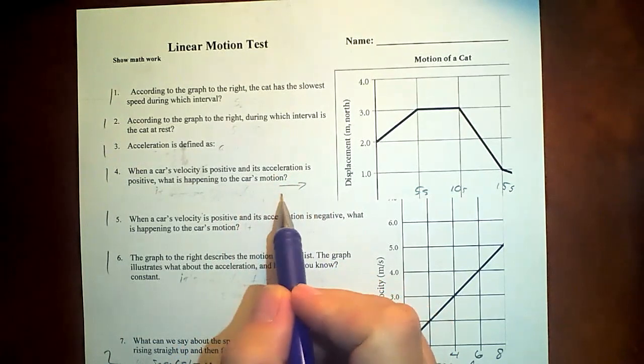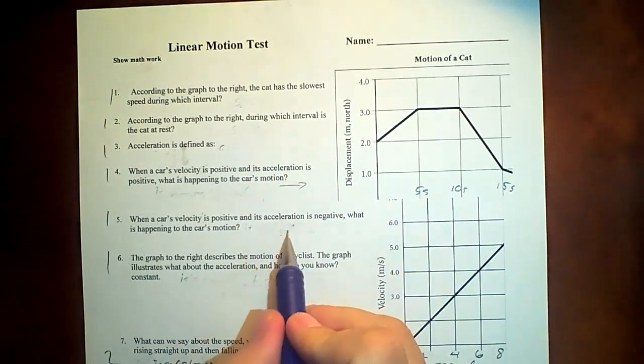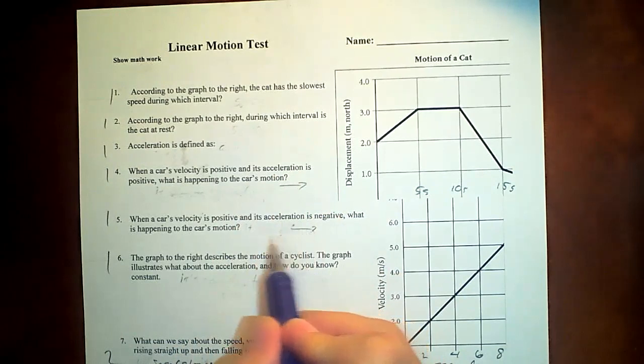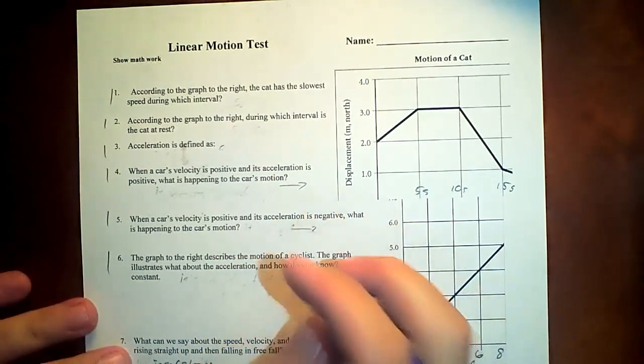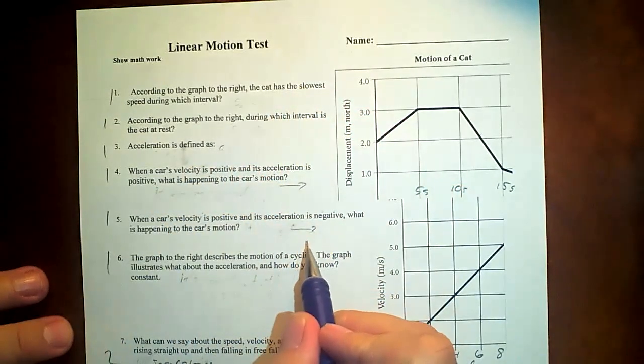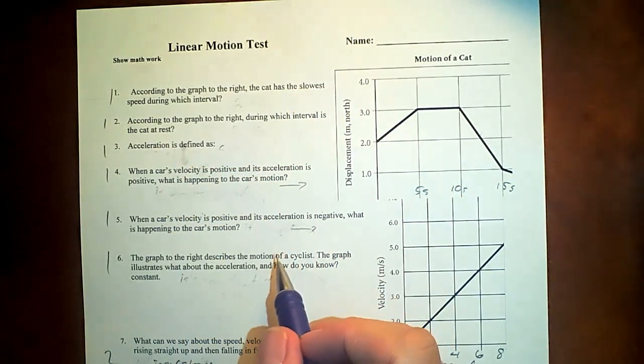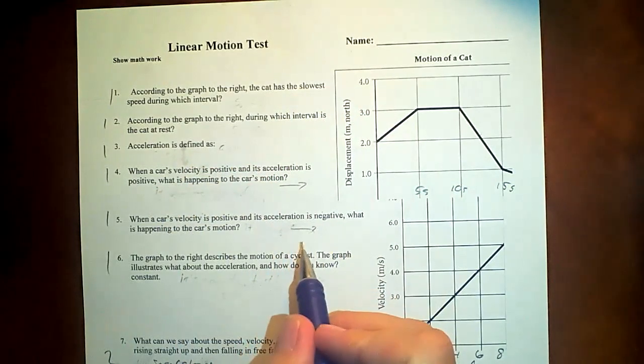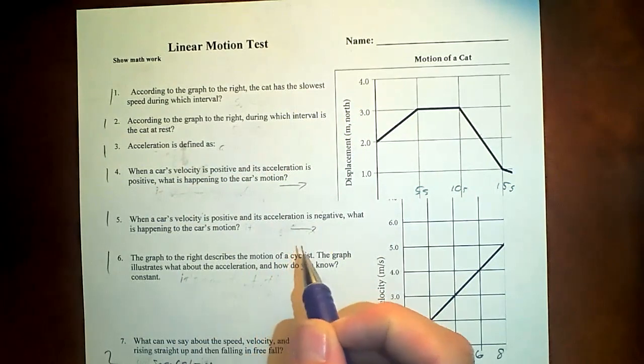Anyway, so if that's positive and its acceleration is positive, what's happening to the car's motion? It's getting faster. It's accelerating in the same direction it's moving, so it's getting faster. When it's positive and its acceleration is negative, what's happening to the motion? Well, it's slowing down. Its change is negative, then it's not so positive anymore, right? Somebody's pushing it to the left in a sense. That could be the brakes, of course.